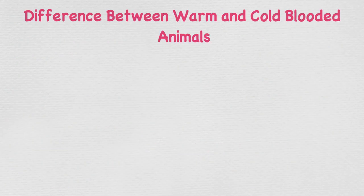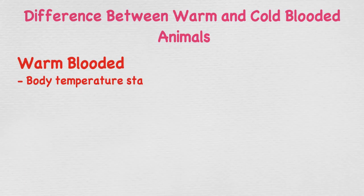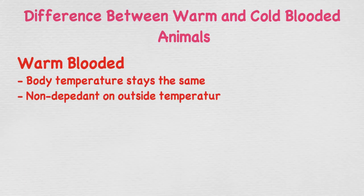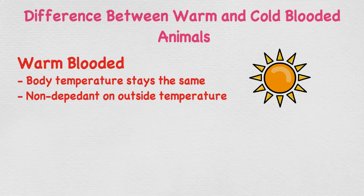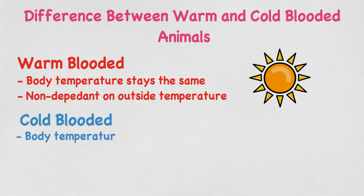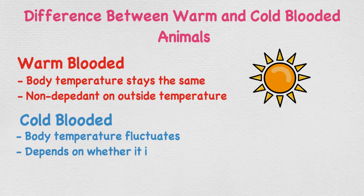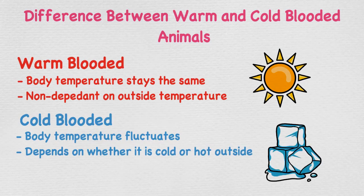What is the difference between warm-blooded and cold-blooded? Warm-blooded animals' body temperature stays the same even when it is cold or hot outside. Cold-blooded animals' body temperature depends on whether it is cold or hot outside. For example, a reptile that is outside in winter will have a very low body temperature, but if it is outside in summer its body temperature will be hot — so it can fluctuate.